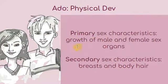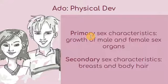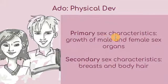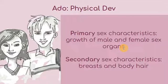Primary sex characteristics refer to the growth of male and female sex organs. For the male, this is the penis, and for the female, it is the vagina. In particular, the sex organ for the female would be the ovary — the one that produces the egg — which will be combined with the sperm of the male. This is fully developed and this is what is referred to as primary sex characteristics.